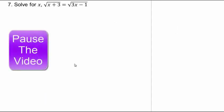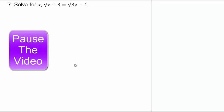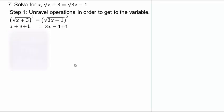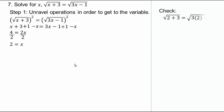For the next example, both sides are square roots. Square both sides, add 1 to both sides, and subtract x. Divide by 2 and x equals 2. Check your answer to make sure it works. So x equals 2 is the solution.